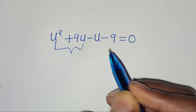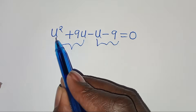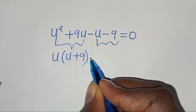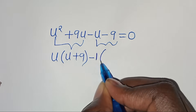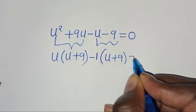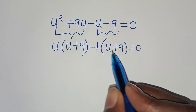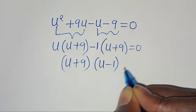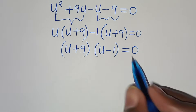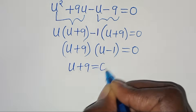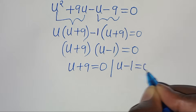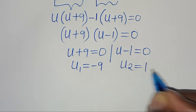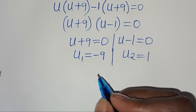Grouping into two parts: from the first part, u is common, giving u(u + 9). From the second part, 1 is common, giving −1(u + 9). So (u + 9)(u − 1) = 0. This gives u + 9 = 0 or u − 1 = 0, meaning u₁ = −9 and u₂ = 1.